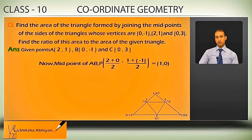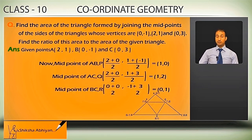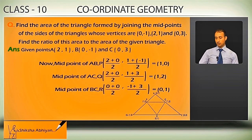Now midpoint of AC — I let it be Q: ((2+0)/2, (1+3)/2) = (1, 2). And midpoint of BC — I let it be R: ((0+0)/2, (-1+3)/2) = (0, 1).